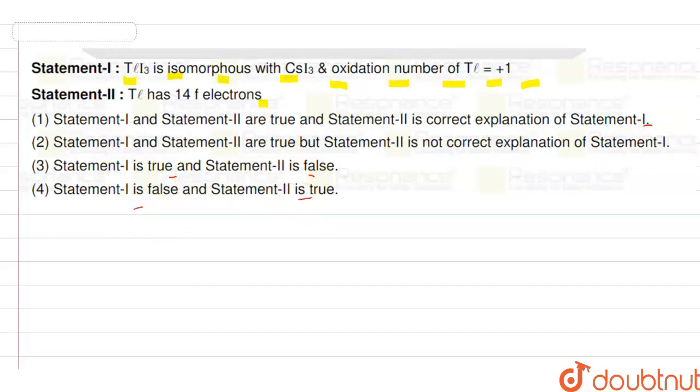So see, here we have TLi3 and CsI3. If I talk about them, CsI3, you know that it belongs to our alkali metals. And if I talk about TLi3, then where is it? This is what happens in the boron family, and this will come here. Indium, TL.